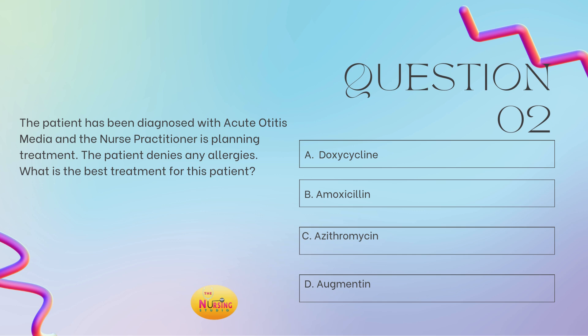The stem of the question states: what is the best treatment for this patient? When we're talking treatment, you have to run it back and see what the diagnosis is — have they given us a diagnosis and we're just looking to treat it? Here they let us know that the patient has been diagnosed with acute otitis media. They don't have any allergies, so we're free game on what we can utilize to treat them. Your best answer is B, amoxicillin, because that's first-line therapy for acute otitis media.